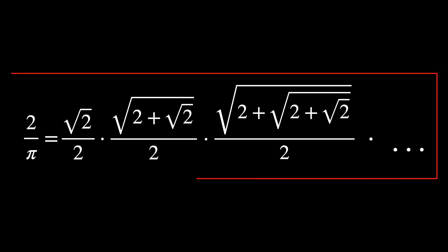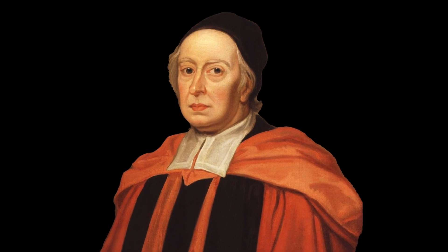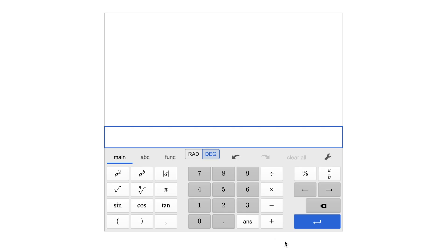The really surprising part of this formula, at least for the 16th century, was the three dots at the end. This was the first time that an infinite process was explicitly expressed as a mathematical formula. Soon after, in 1650, the English mathematician John Wallis discovered another one involving π.